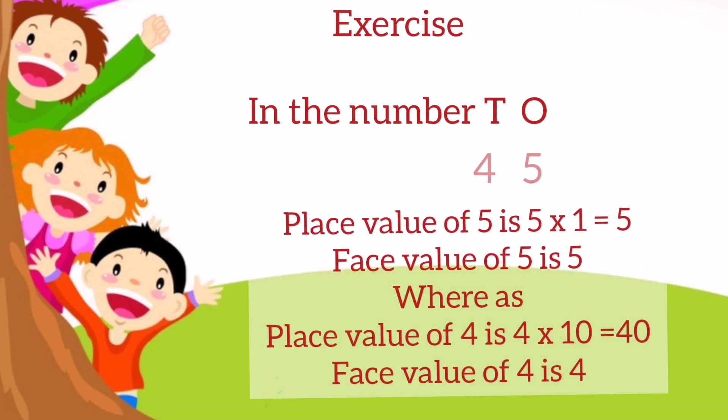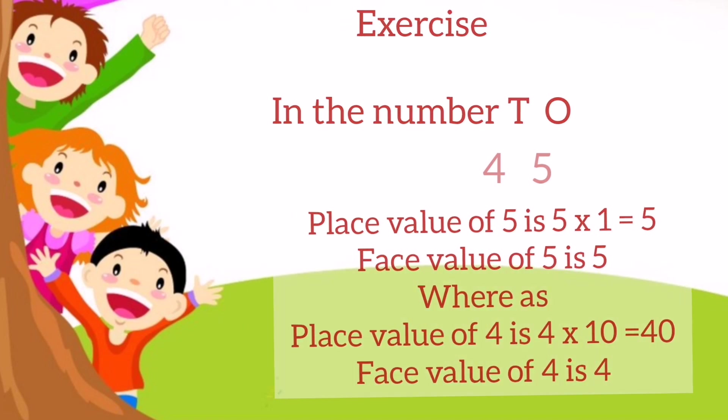Let's start with the exercise. In the number 45, place value of 5 is 5 × 1 = 5 because 5 is in the ones place. And the face value of 5 is 5. It will never change. Next, place value of 4 is 4 × 10 = 40 because 4 is in the tens place. And the face value of 4 is 4. It will not change.